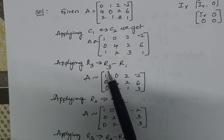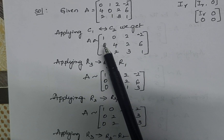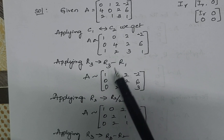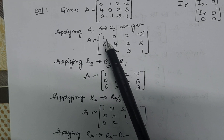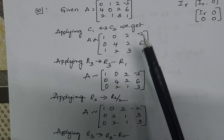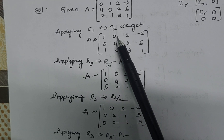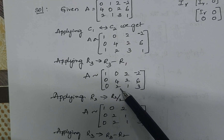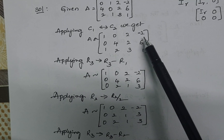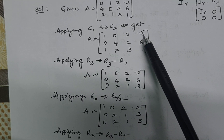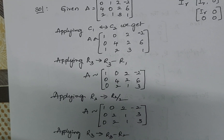Applying R3 → R3 - R1. The first two rows remain as they are. In the last row: 1 - 1 = 0, 2 - 0 = 2, 3 - 2 = 1, and 1 - (-2) = 3.